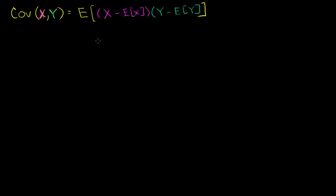If it doesn't make a lot of intuitive sense yet, you can just think about what it's doing and play around with some numbers. But the reality is, it's saying how much they vary together. You always take an x and a y for each of the data points — every x and y that go together, that are a coordinate, you put into this.